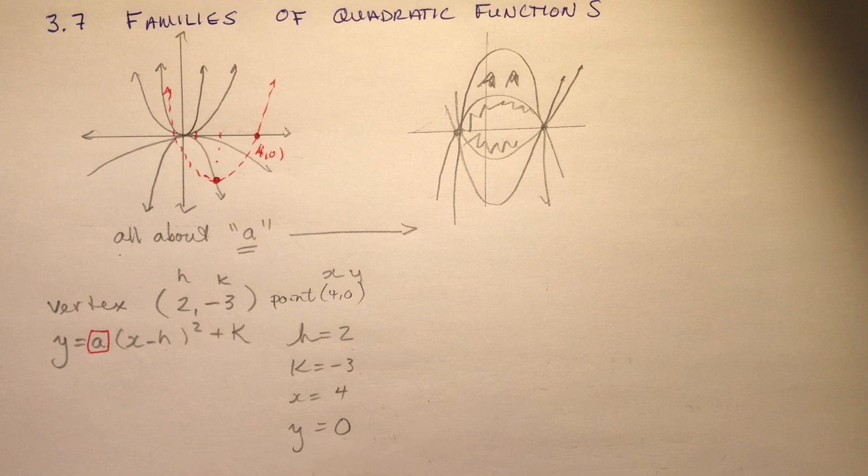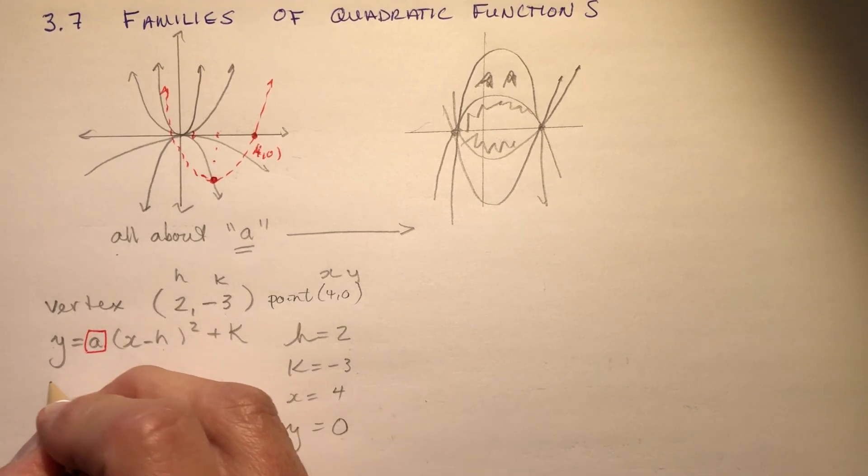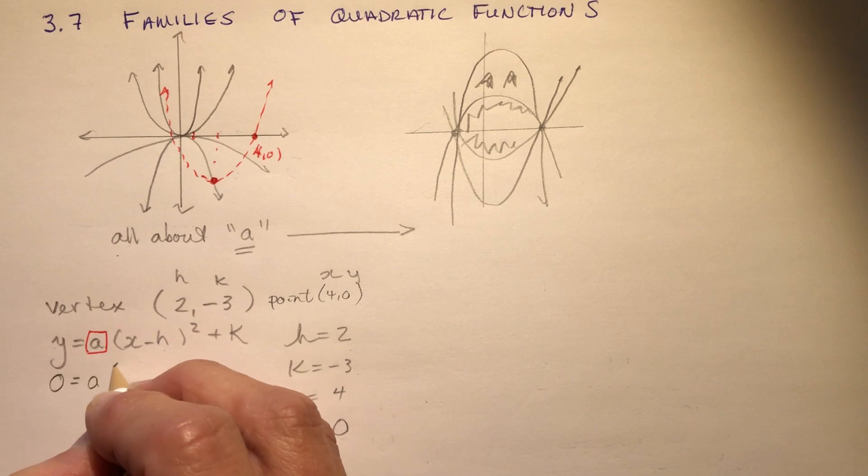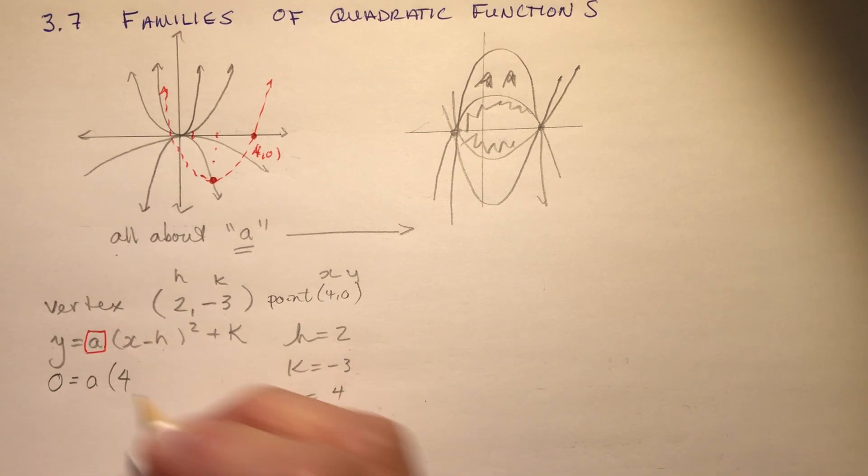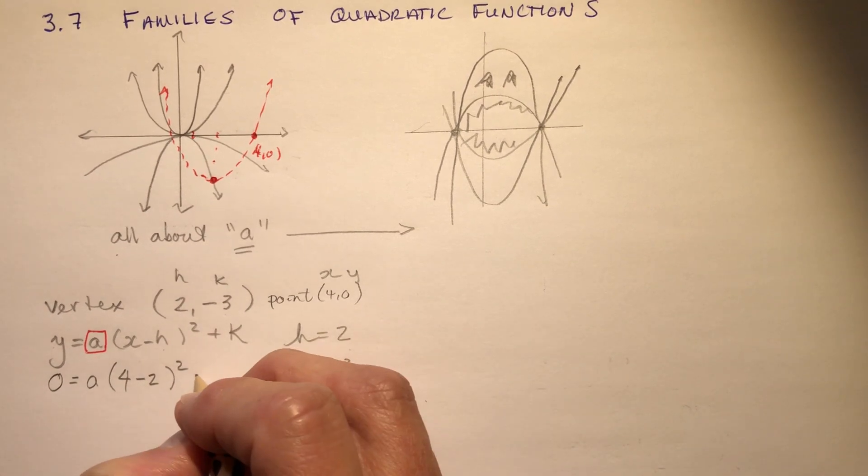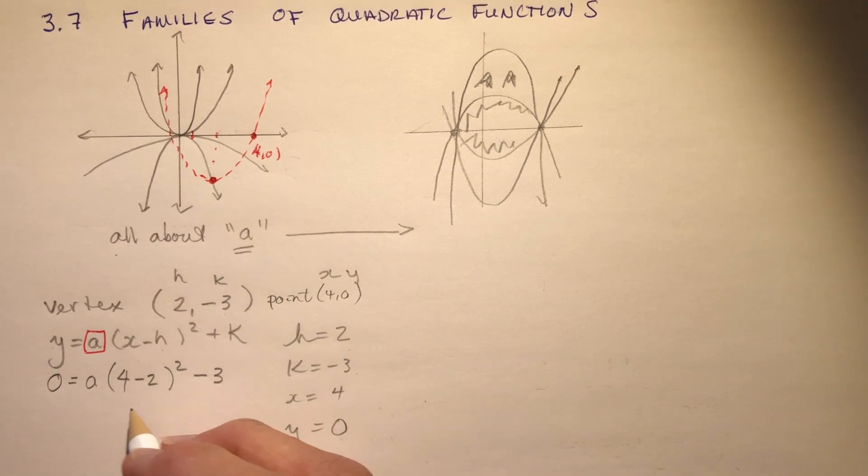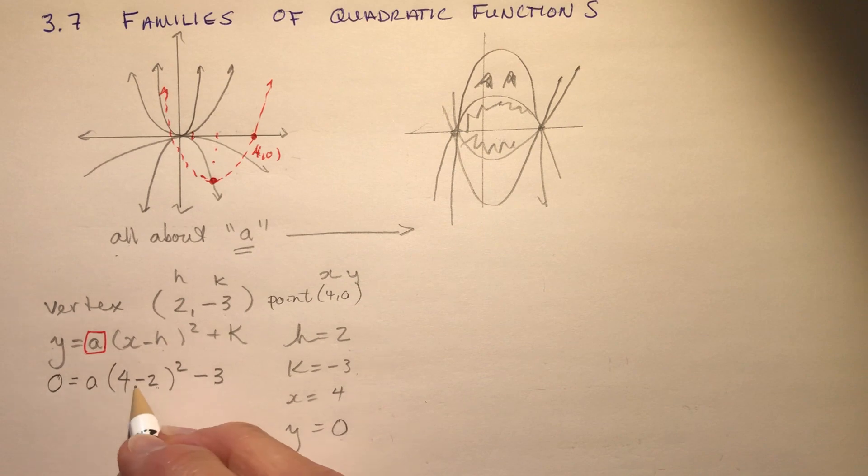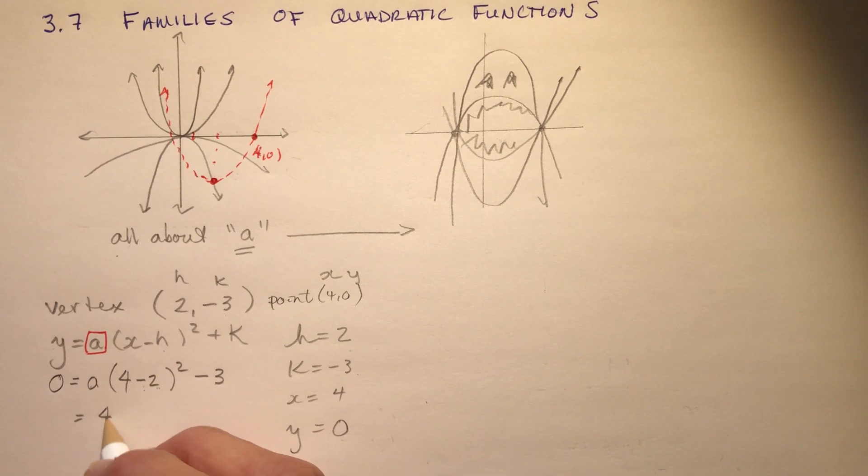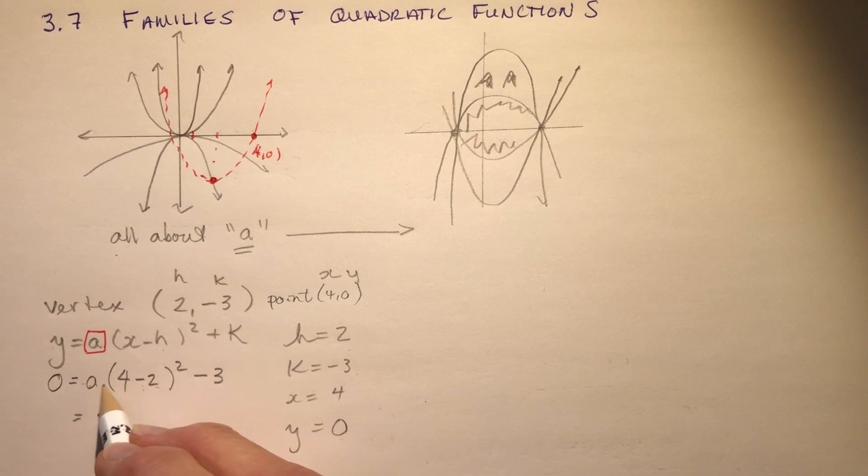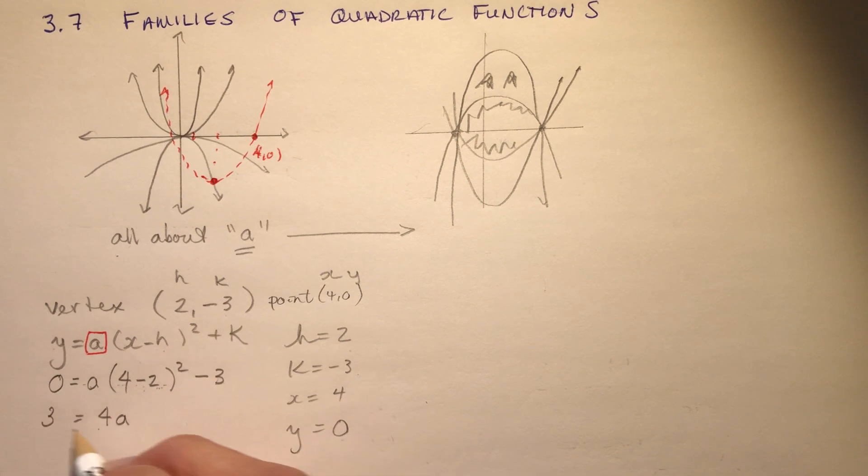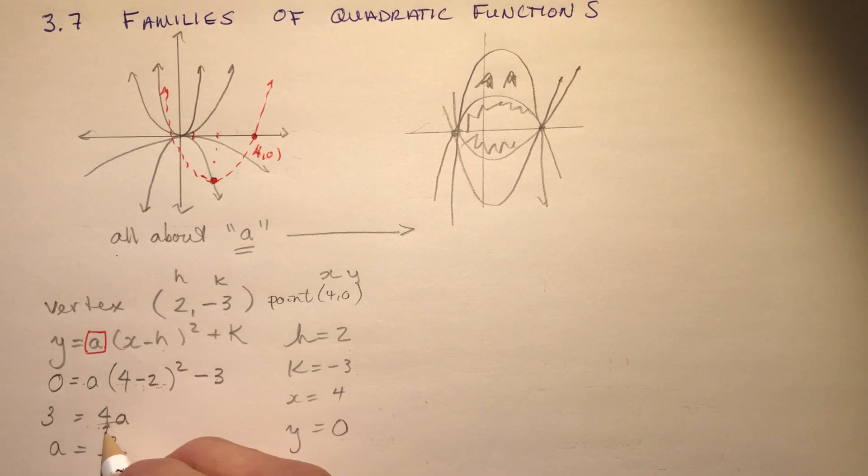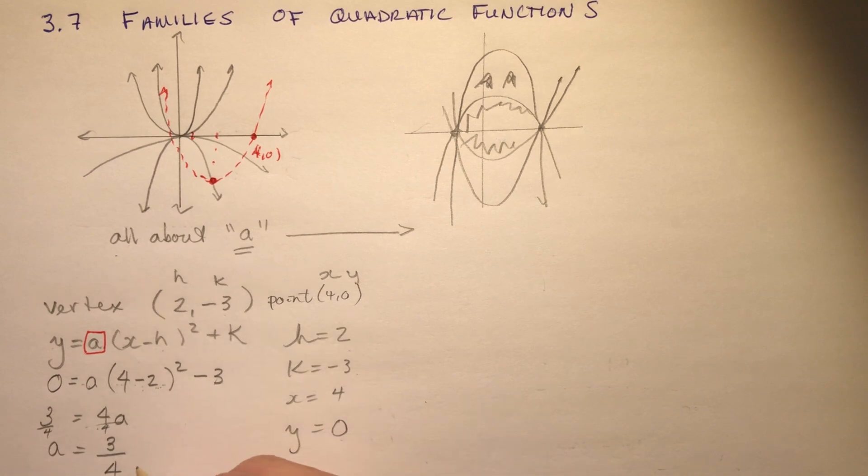And that's what I'm going to solve for by just substituting in all of these values. So I'm going to say zero is going to be equal to a, my x was a four, my h is a two, I'm going to square it, and I'm going to add minus three or subtract three. So four minus two is two, and two squared is four. So that's a times four, or four a. I have some people have trouble with that. This is all multiplied, right? So four a. And I'm going to bring the three over here. So three is equal to four a. So a is equal to three divided by four. Don't say four thirds. Make sure you're careful with what you're dividing by.